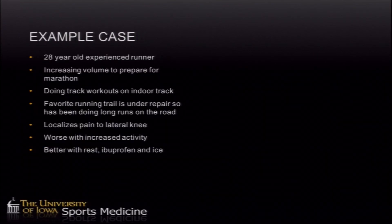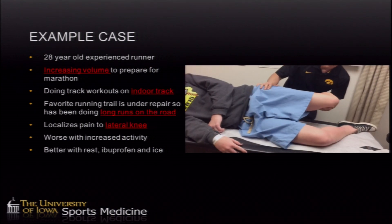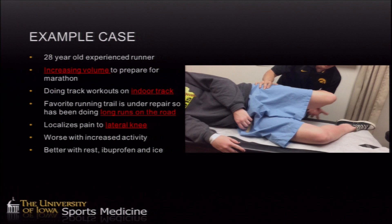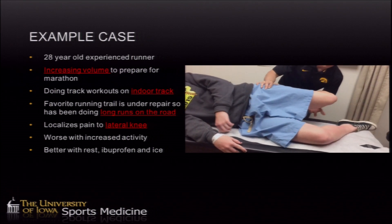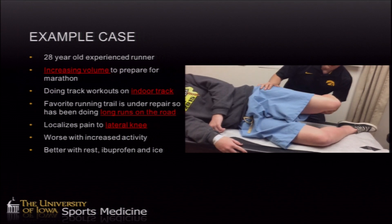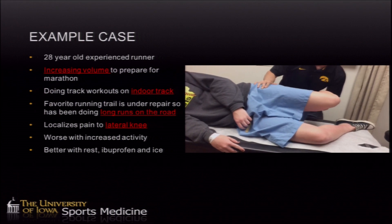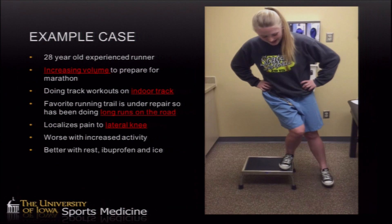Those are examples of what we look at in the sports medicine clinic. Now let's work through a more specific case. This is a 28-year-old experienced runner who has been increasing her volume in preparation for a marathon. She's been doing track workouts on an indoor track, her favorite trail is under repair so she's doing more long runs on the road — which slopes away from the middle — and she has pain on the lateral aspect of her knee, worse with activity and better with rest, ibuprofen, and ice. This is a very good case for iliotibial band syndrome, and we're able to figure out the underlying problem just from the history. Physical exam may show contracture in the iliotibial band and weakness in hip abduction strength.